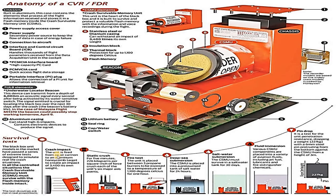The first test is crash impact. The unit is fired from an air cannon to an aluminum honeycomb target to create an impact of 3,400 times its own weight. The second test is the static crush test. For 5 minutes, 226 kg per square inch of force crushes each of the unit's six major access points. In this test, the CSMU must survive.